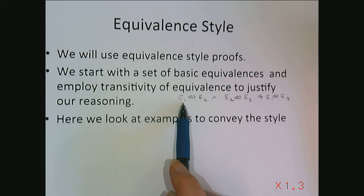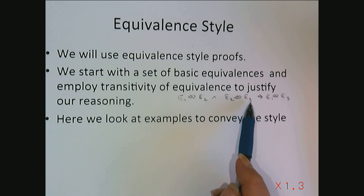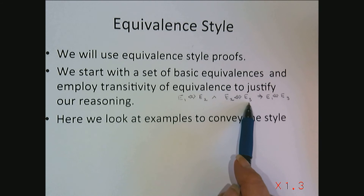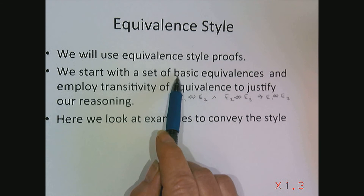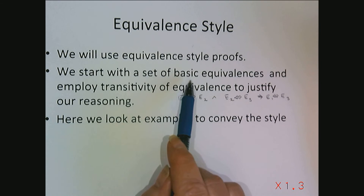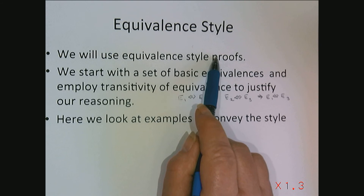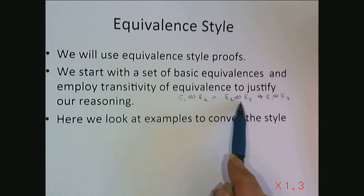What's transitivity? If you have expression 1 equivalent to expression 2, and expression 2 equivalent to expression 3, then by transitivity, expression 1 is equivalent to expression 3. So if we can start with a predicate and find equivalent predicates using our basic equivalences, then the original predicate is going to be equivalent to the last manipulation by transitivity.